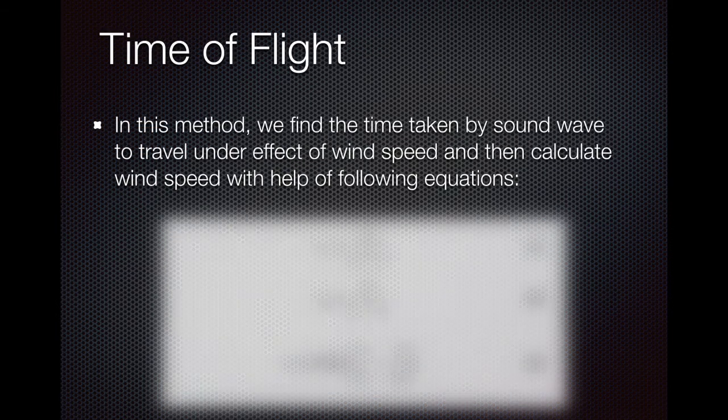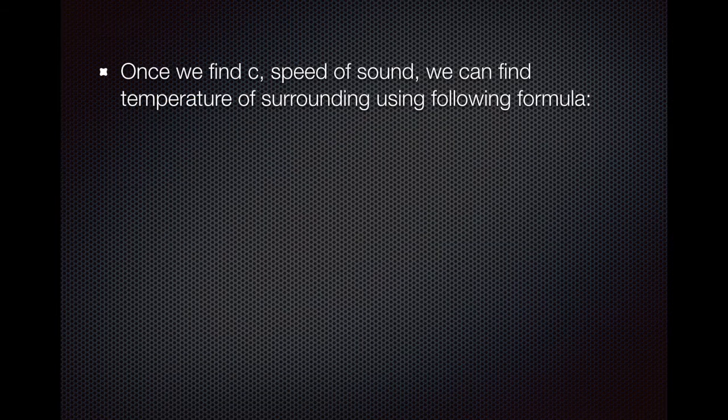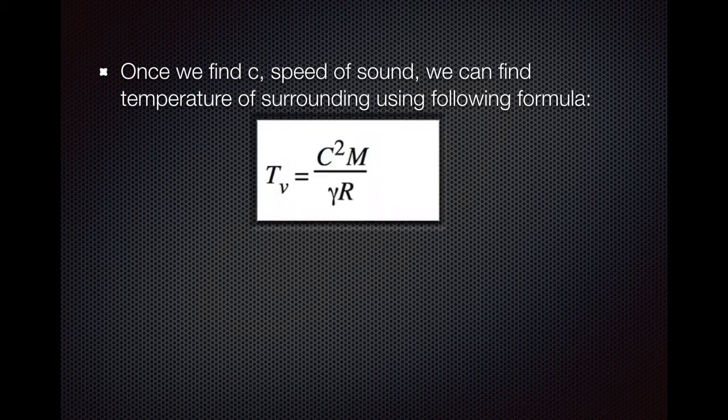So these are the equations, and the velocity of wind as you can see here is 0.5L times (1/T1 minus 1/T2). Also from this equation we can find the speed of sound and find the temperature using this formula. However, this formula ignores the humidity effect on sound, and hence this temperature is not actual temperature but known as sonic temperature.